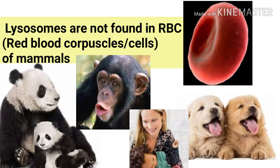What are mammals? Mammals are organisms which give birth to young ones — they don't reproduce using eggs. Examples include pandas, chimpanzees, humans, dogs, and cats — all these organisms are mammals because we give birth to young ones. So in the RBC of mammals, lysosomes are absent.